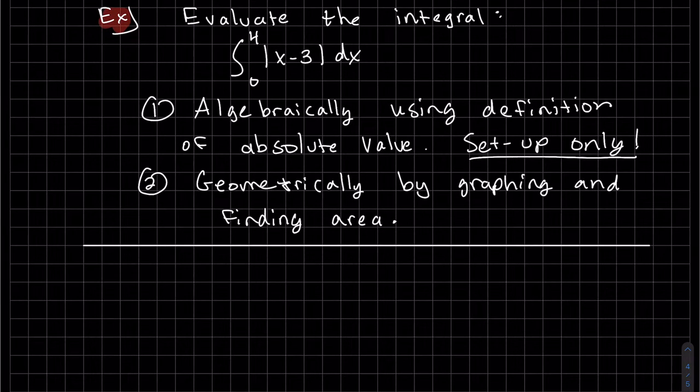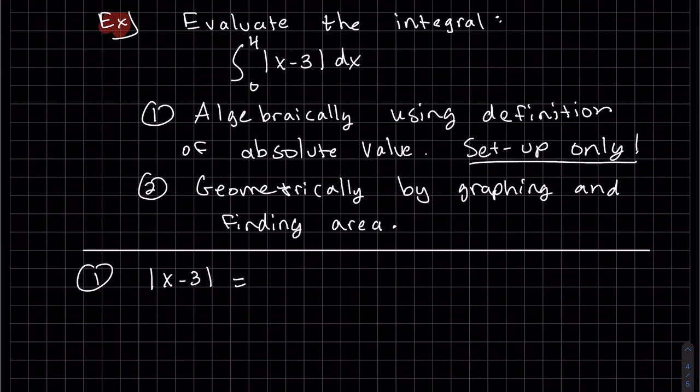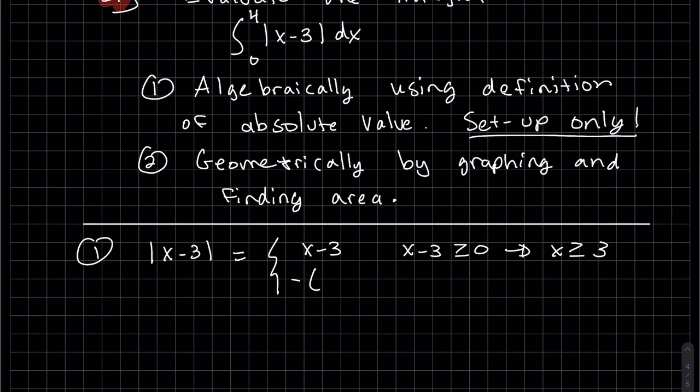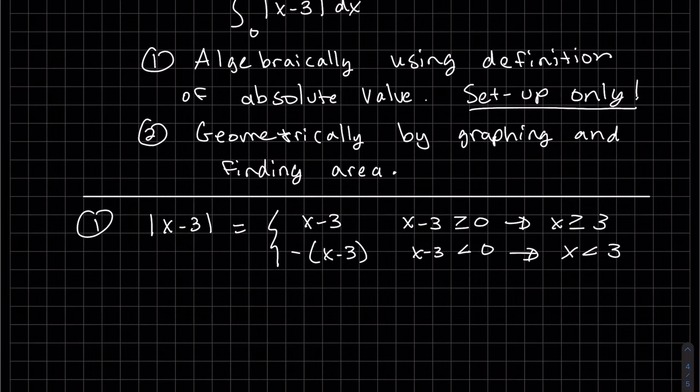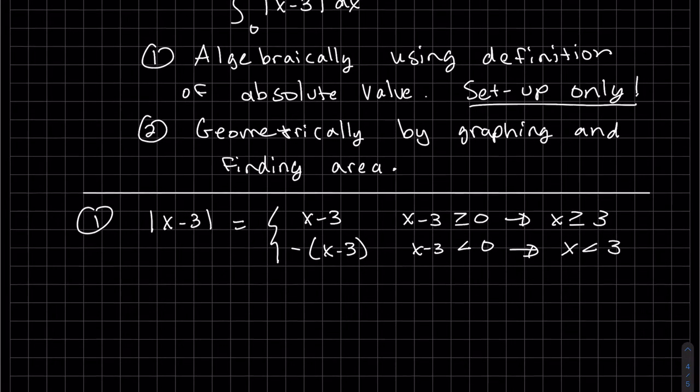We're first going to evaluate the integral algebraically, using the definition of absolute value. Basically, we're going to set up the integral. We have to write this algebraically. It's x - 3 if x - 3 is greater than or equal to zero, or basically x is greater than or equal to 3. Basically, inside has to be greater than zero. It can't just be x is greater than zero. And then this one's the opposite of x - 3. If this is x is greater than 3, this is x is less than 3. Now, when I go to set it up, I think it's actually better for me to look at the graph.